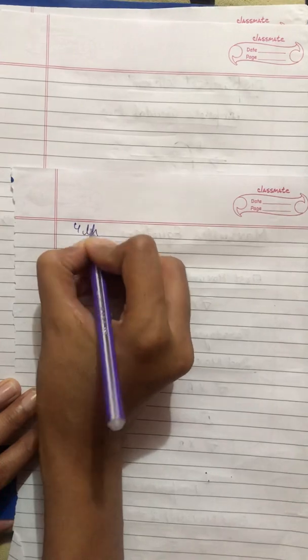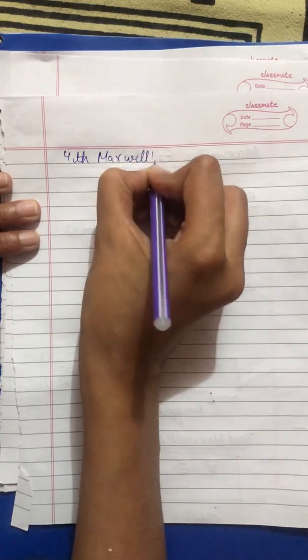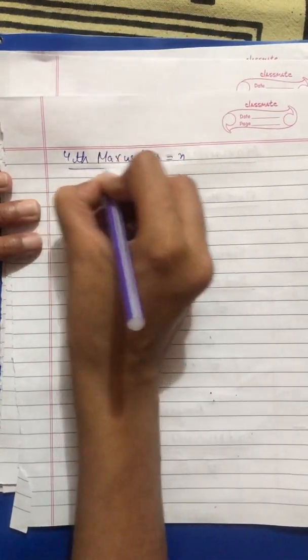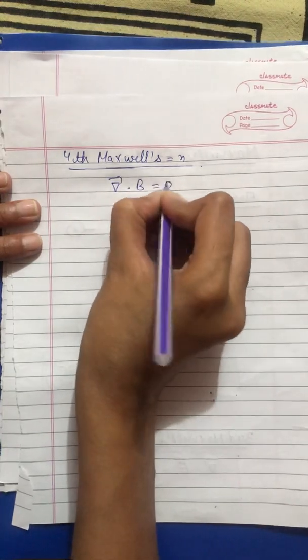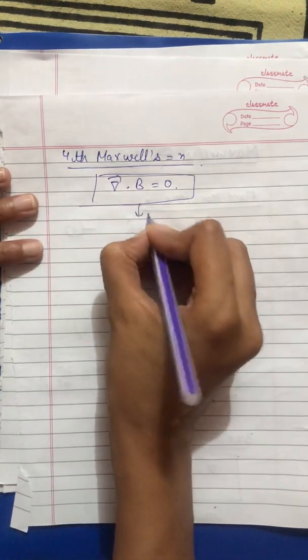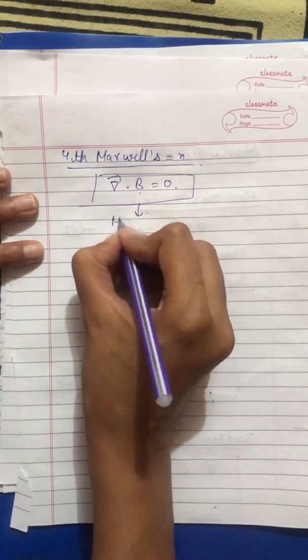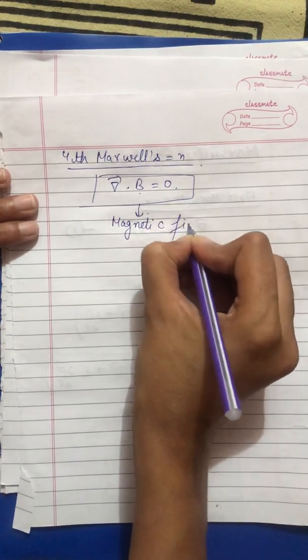Three are done. Next, fourth is fourth Maxwell equation. Del dot B is equals to zero. This is the fourth equation. And this is the general equation of B, which is magnetic field. So this is also the general equation of magnetic field.